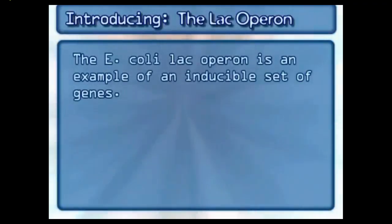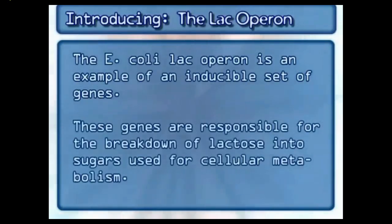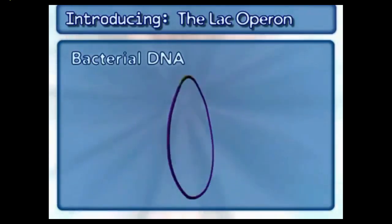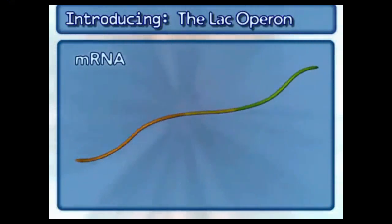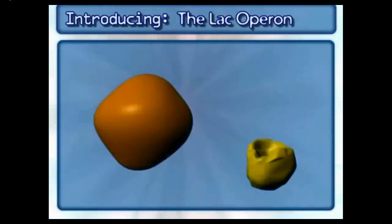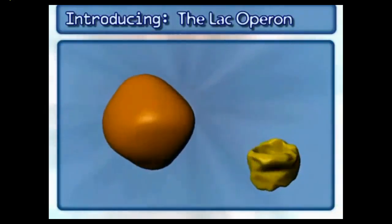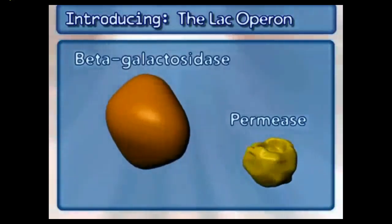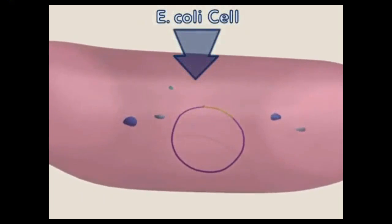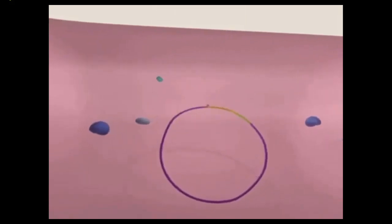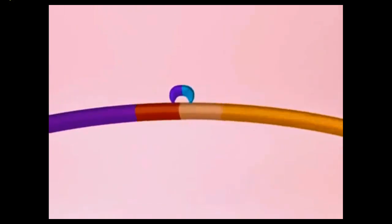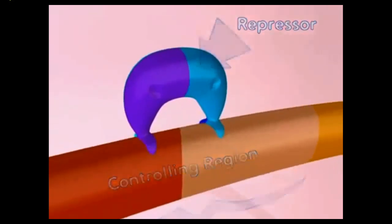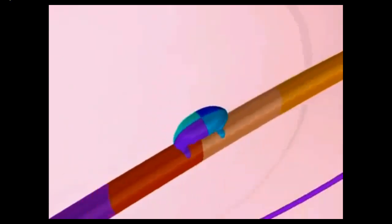The E. coli lac operon is an example of an inducible set of genes. These genes are responsible for the breakdown of lactose into sugars used for cellular metabolism. This inducible system also involves bacterial DNA, a repressor, mRNA, and the sugar molecule lactose. This animation will focus on two of the three proteins encoded by the lac operon: beta-galactosidase and permease. Gene expression can be induced or turned on when a specific inducer molecule appears in a cell. For inducible systems, a repressor molecule prevents gene expression by binding to the upstream controlling region. Lactose is the lac operon inducer molecule.